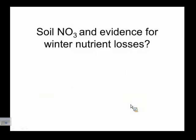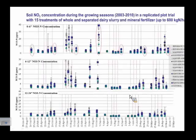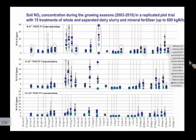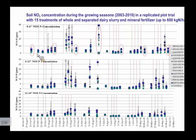We have evidence of nitrate losses in the soil, and we've done a few experiments to look at that, particularly wintertime losses. This long-term experiment shows a bunch of different treatments and rates — different fertilizer rates, different rates of whole dairy slurry, and different rates of separated liquid dairy slurry — from 2003 when the experiment began all the way to 2010. The soil nitrate was measured just prior to each manure application and after each harvest during the year, and at the end of each season.